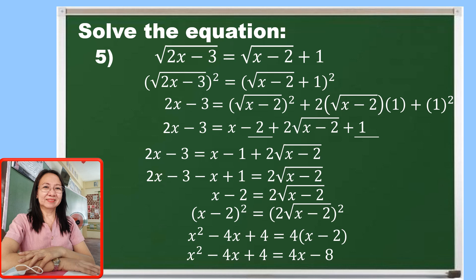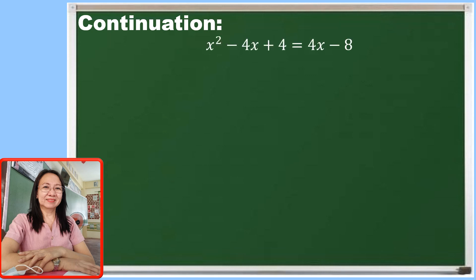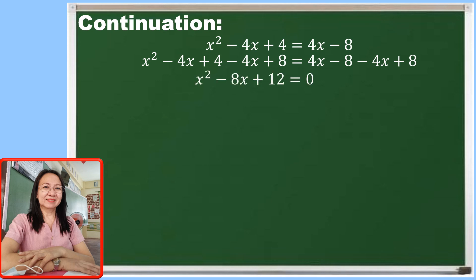Let us continue. Let us copy the last part where we have x squared minus 4x plus 4 is equal to 4x minus 8. We apply the addition property of equality by adding both sides by negative 4x plus 8 to eliminate the right side. Combining similar terms, we have x squared, then negative 4x plus negative 4x is negative 8x, and 4 plus 8 is 12, giving us x squared minus 8x plus 12 equals 0.